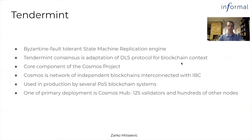Tendermint is a Byzantine fault-tolerant state machine replication engine. At the core of Tendermint we have a BFT consensus protocol, which is a variant of a DLS protocol for an efficient gossip layer. It is a core component of the Cosmos project, a network of independent blockchains running on top of Tendermint-like consensus engines interconnected with the inter-blockchain communication protocol. It is used in production by several proof-of-stake blockchain systems for more than a year, securing more than a billion dollars in cumulative value. One primary deployment is Cosmos Hub, which runs on a wide area network with 125 validators and hundreds of other nodes in the gossip network.